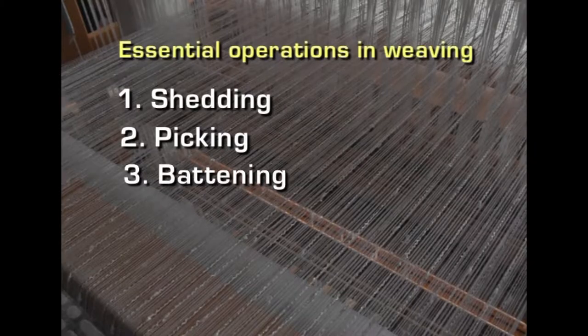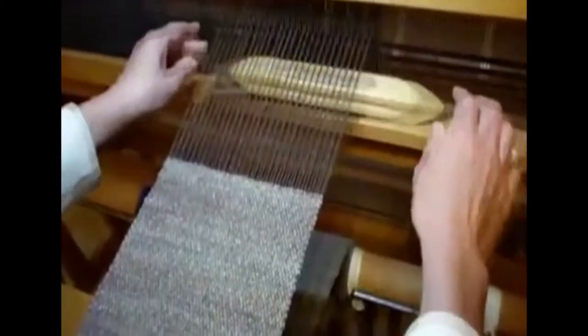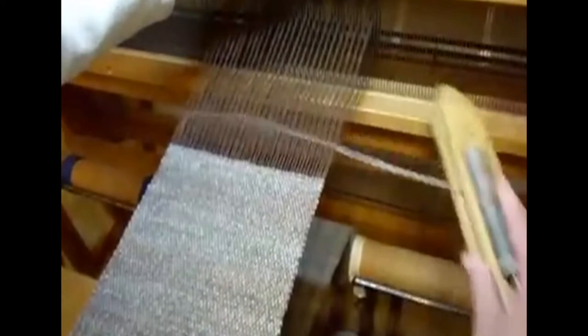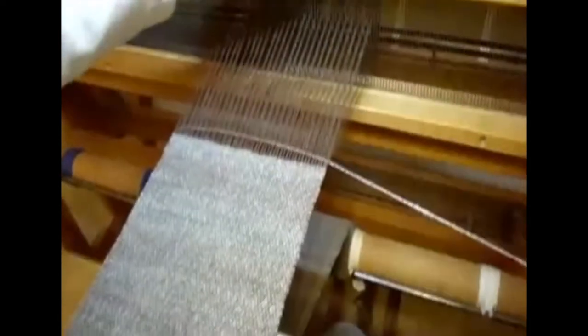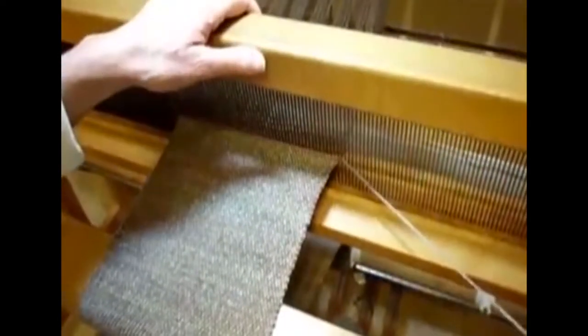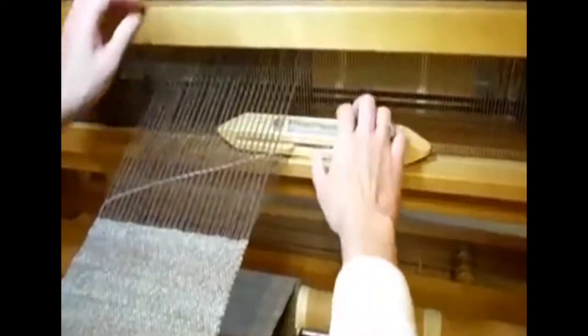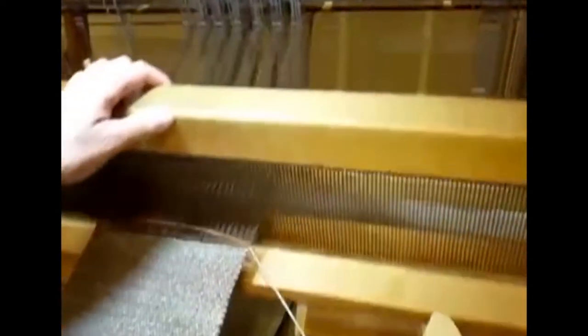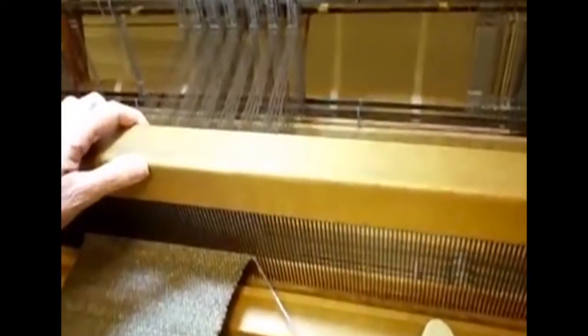The next operation is battening. The weft yarn must be taken onto the already-made fabric, so the pick is battened with the help of the reed. Once the pick is placed, the reed is pushed onto the cloth so the pick is compacted into place. Without battening, it is impossible to produce compact fabrics.